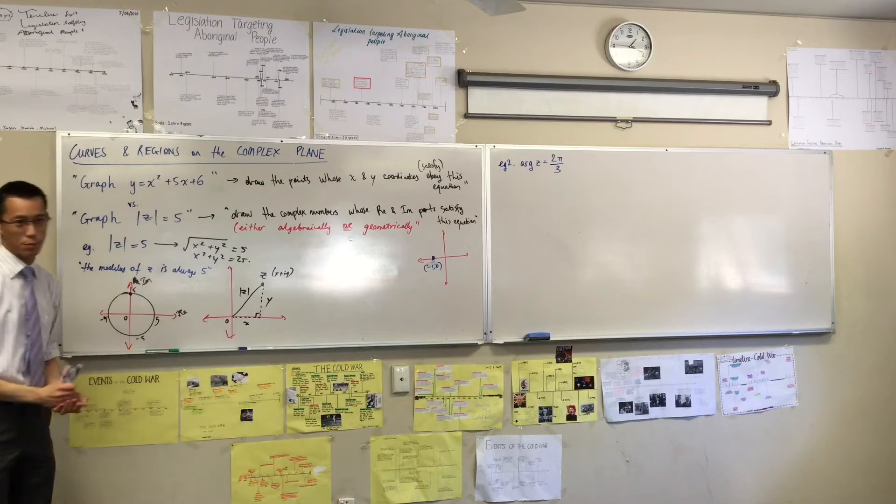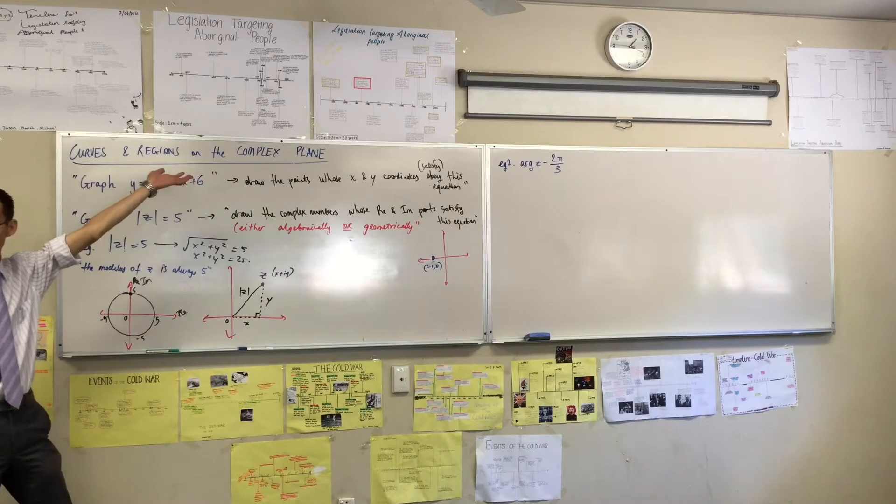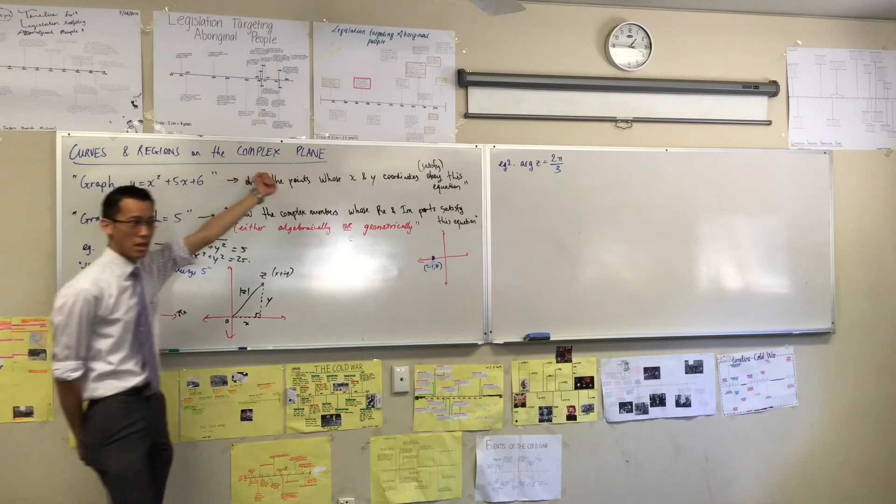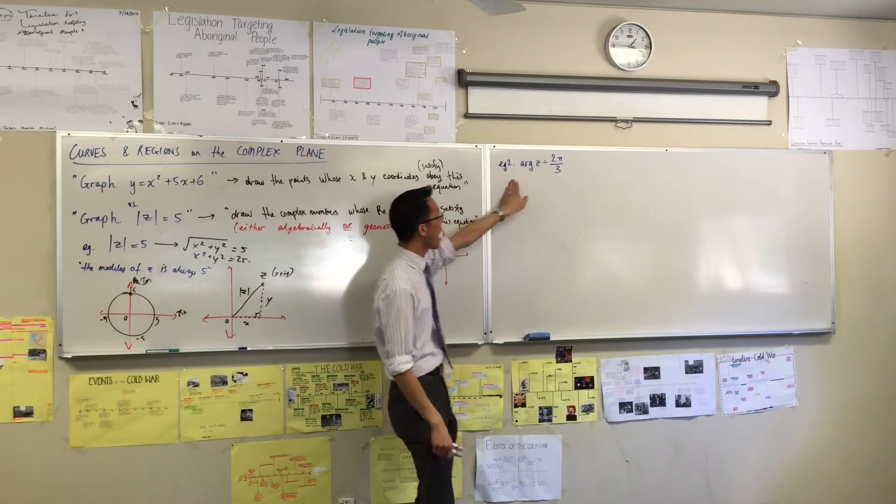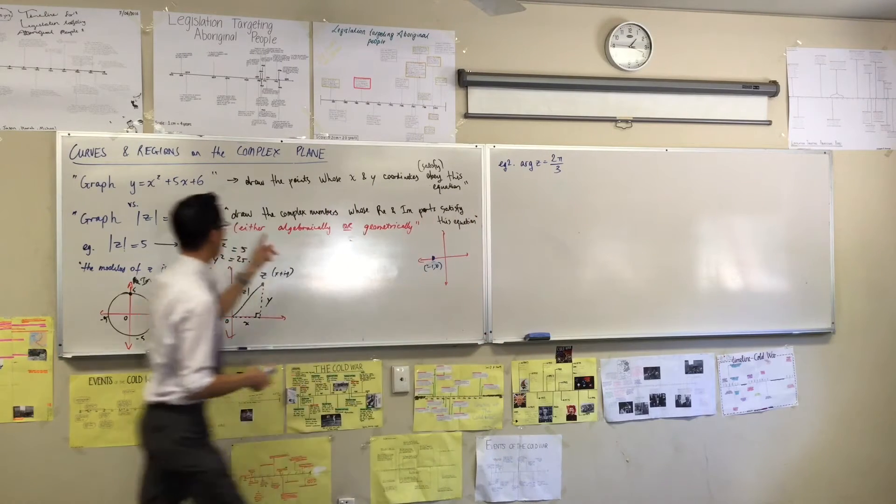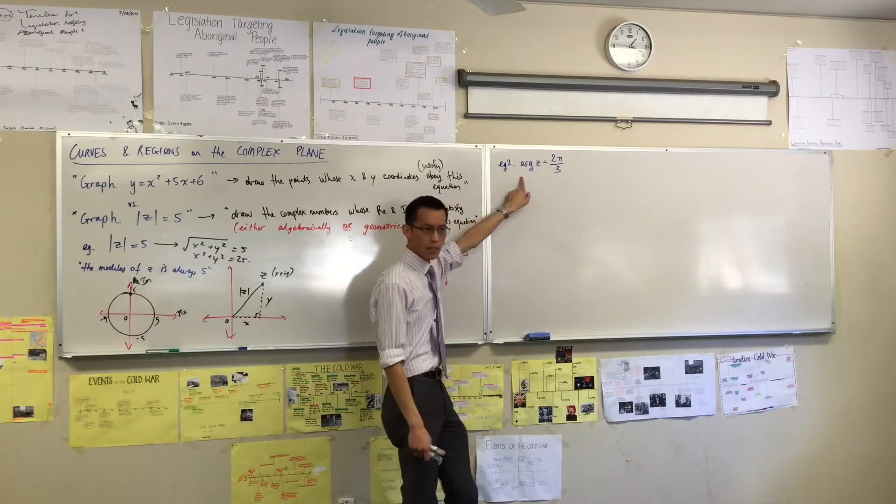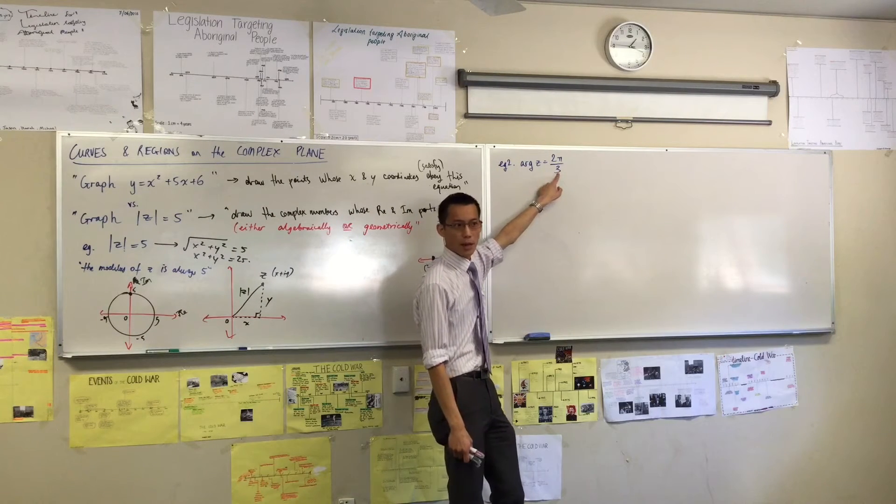Think about it for a moment before you put pen to paper. What's that prefix at the front of z mean again? That's the argument, right? So when I say arg z equals 2π/3, what I mean is tell me, draw all of the complex numbers whose argument is that number there, 2π/3.